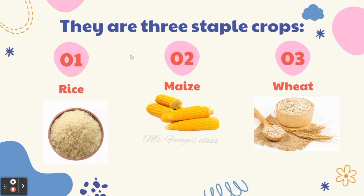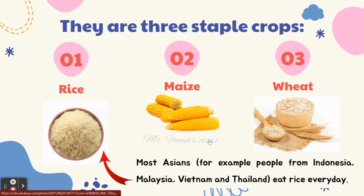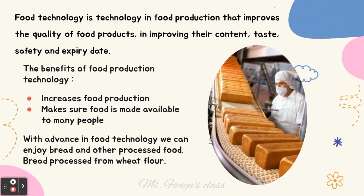There are three staple crops. The first is rice, the second is maize, and the third is wheat. Most Asian people — for example, people from Indonesia, Malaysia, Vietnam and Thailand — eat rice food products every day.